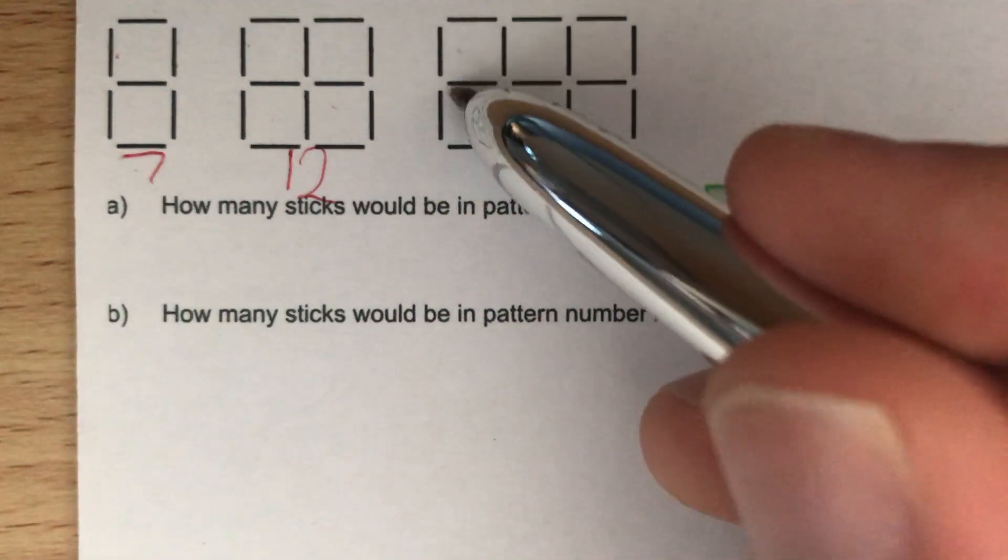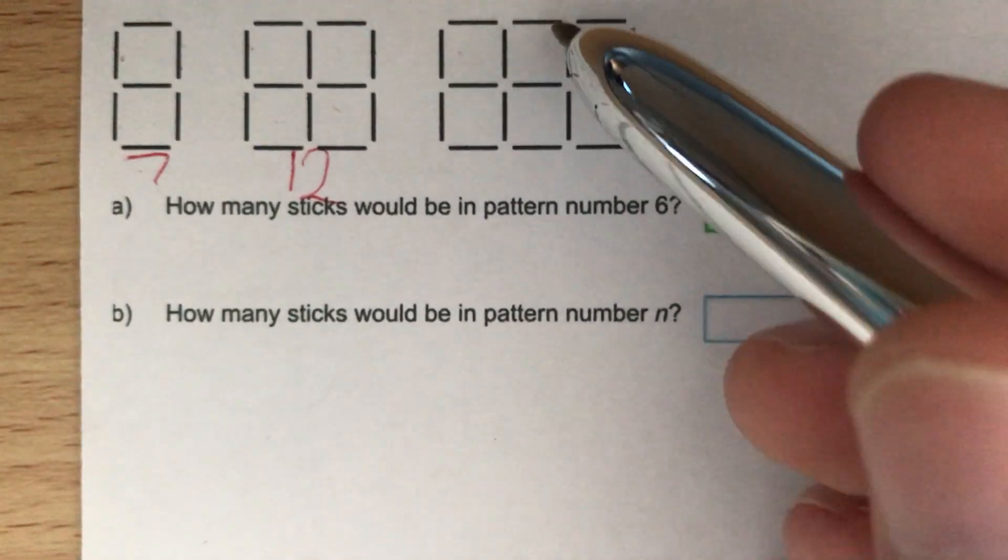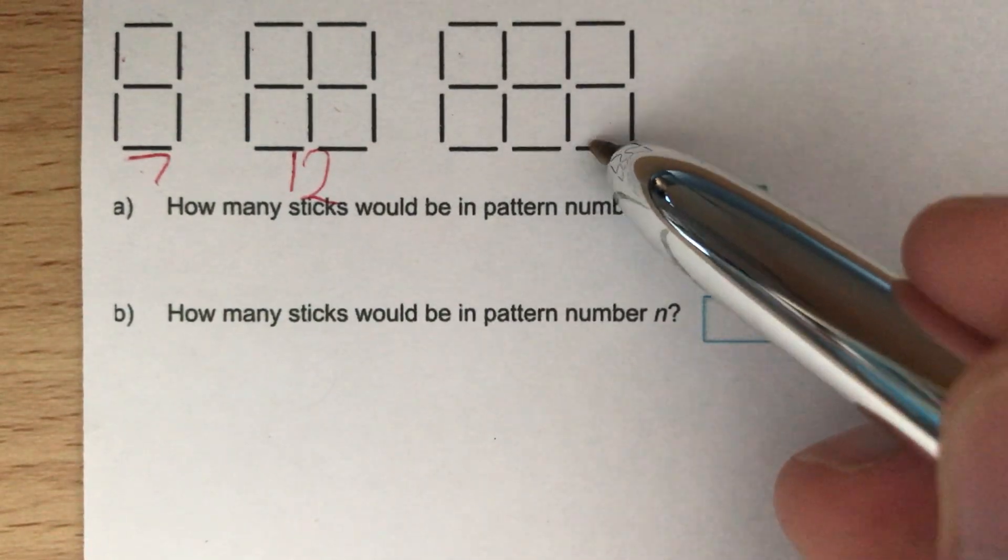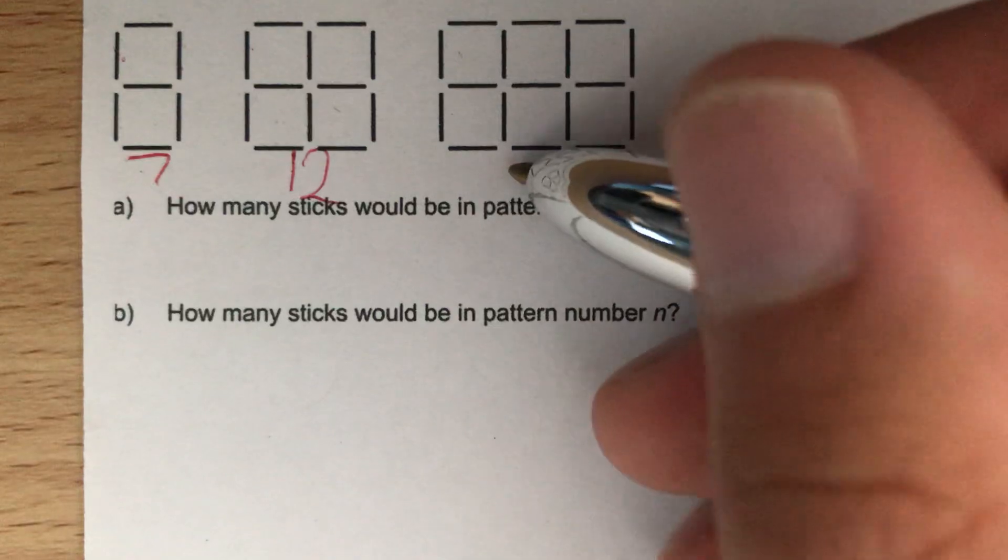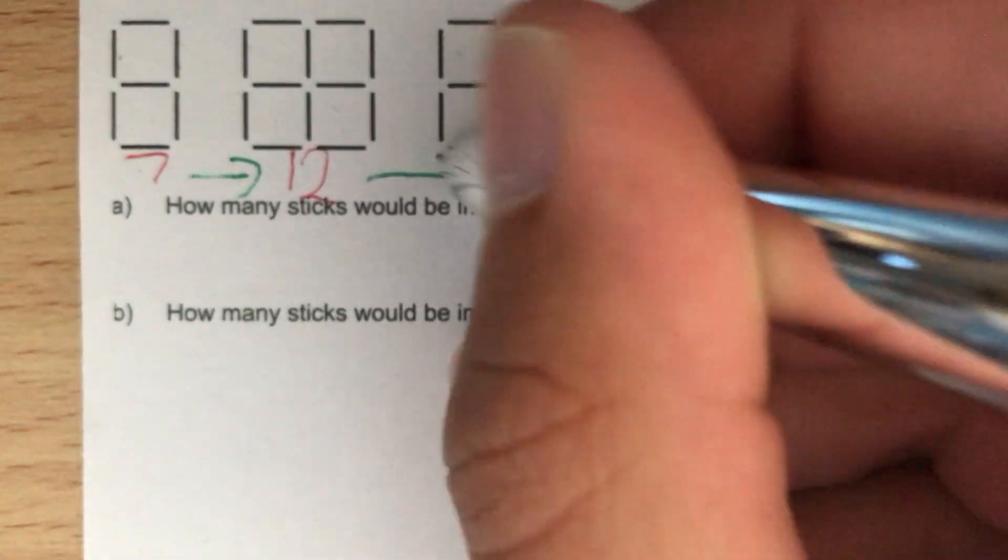And counting our third pattern, we've got 17 sticks in total. So we can see that as we go up 1 in our pattern number, we're adding 5 more sticks.